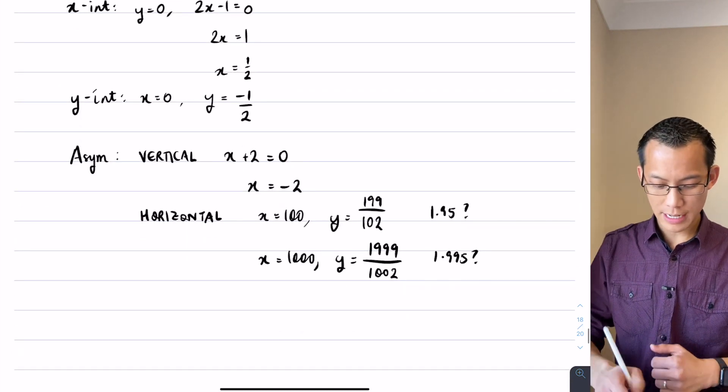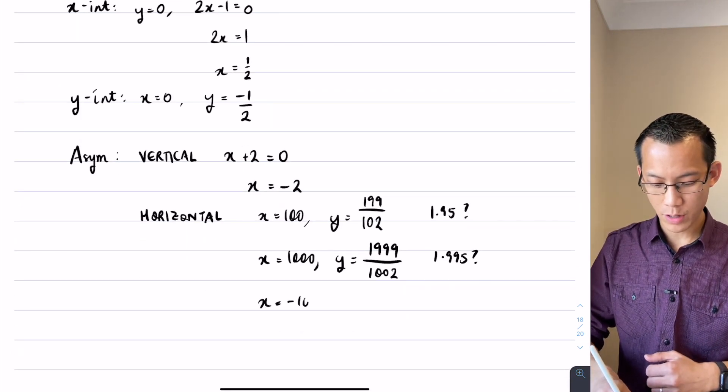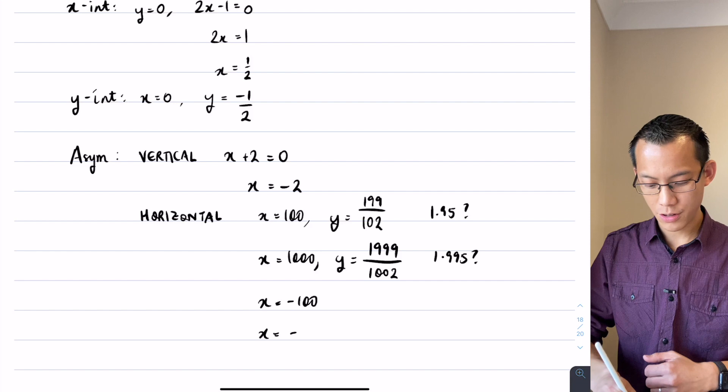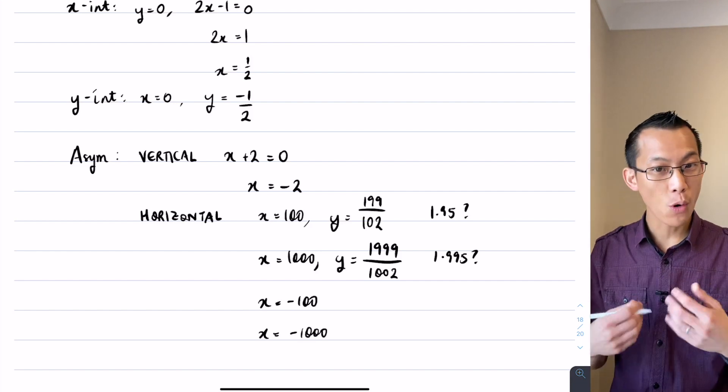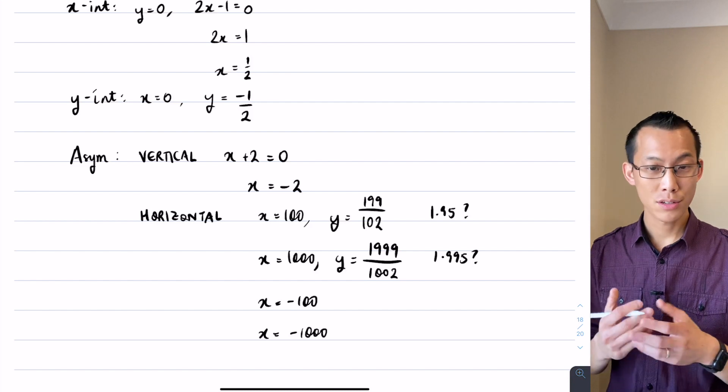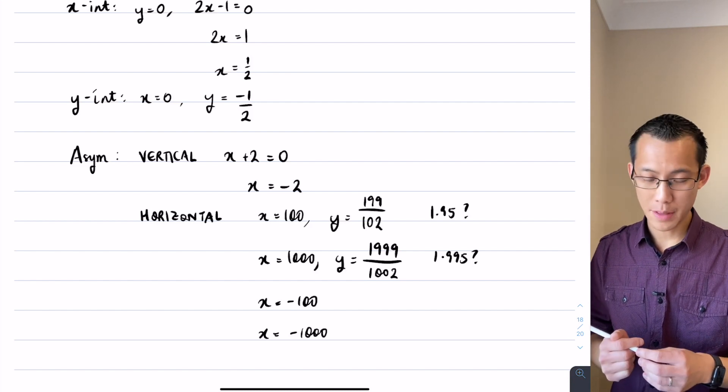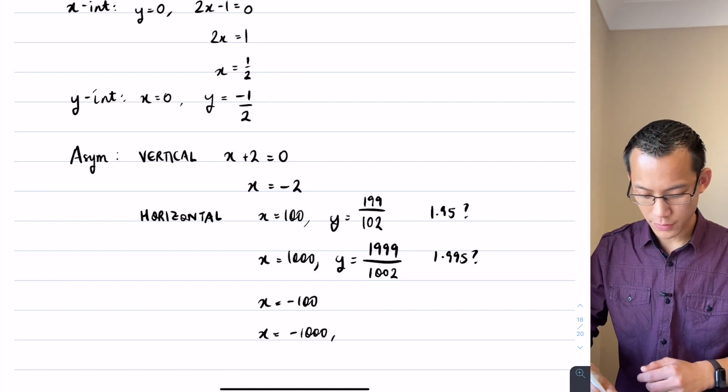Now you can go ahead and you can test some large negative values as well. x equals negative 100 or negative 1000. I can tell you right now you're also going to be approaching 2, but you'll approach it from the other side. Look, I'll just prove it just for the sake of it. Let's do it with x equals negative 1000.